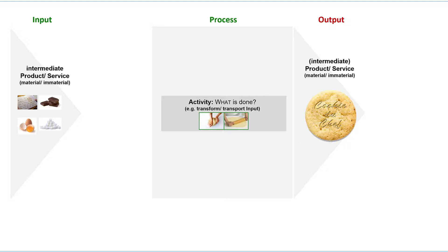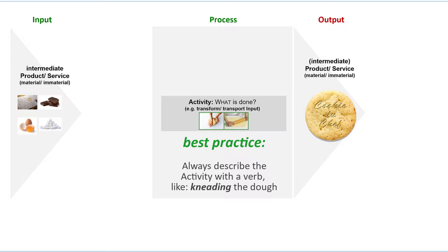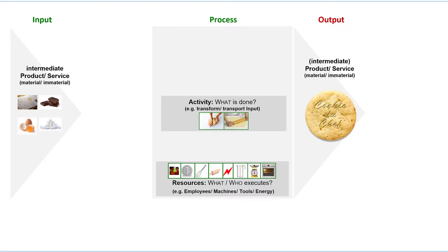In our case, between input and output there is a certain activity which transforms the input into the output — for example, kneading the dough or rolling the dough. You can identify the activity by asking: what is done, or more generally, what happens? Please always describe the activity with a verb in the present progressive tense to express that something really is being done here.